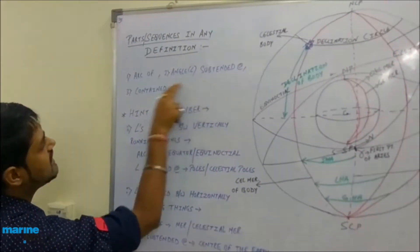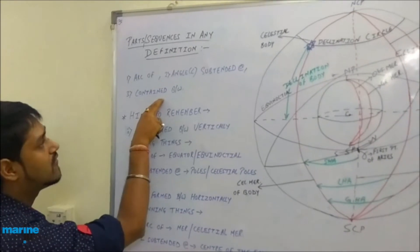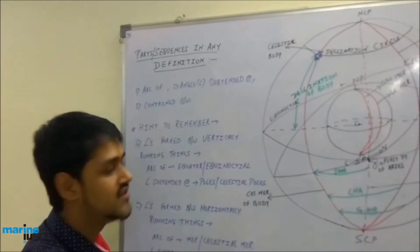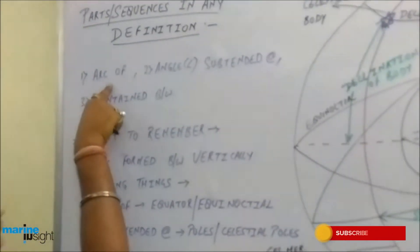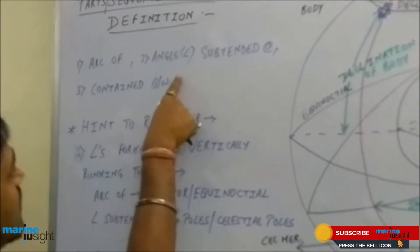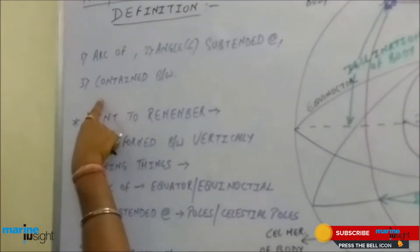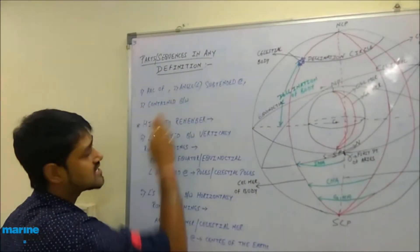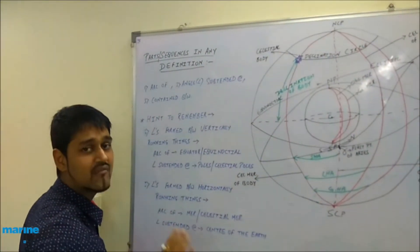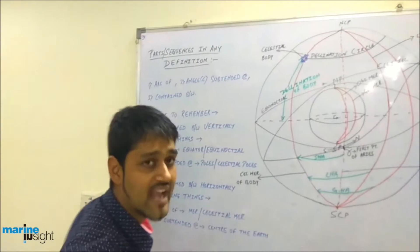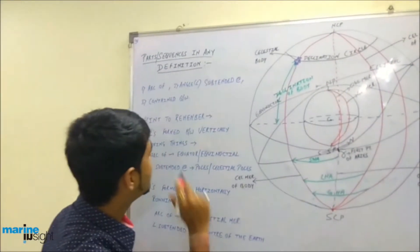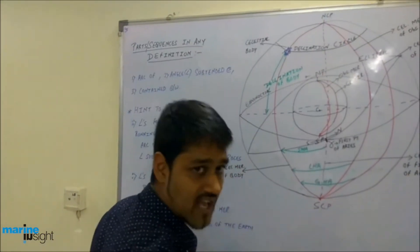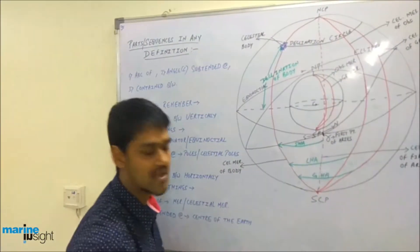These are the three main sequences we follow while defining any definition. The first one is 'arc of,' the second is 'angle subtended,' and the third is 'contained between.' These three, in the same sequence, are followed to define any definition. Before moving forward, I would like to brief you on how to use them.